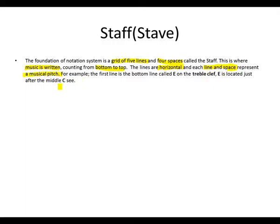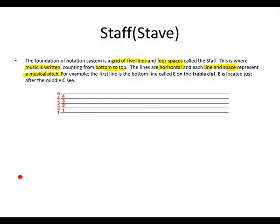What do we mean by that? Let's take a look at the staff. If we had the treble clef here on the staff, then the bottom line would be E. E is slightly above the middle C, which should be somewhere here. So each line and space represents a musical pitch, and the pitch for this bottom line is E.